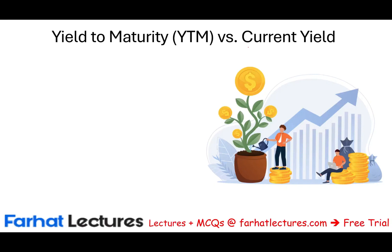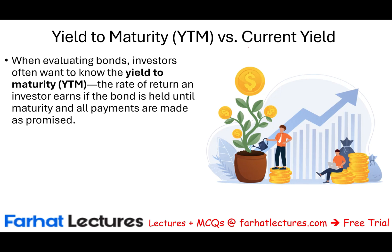Hello, and welcome to this session in which we will discuss yield to maturity, YTM, versus the current yield. Many students confuse the two. Yield to maturity refers to the interest rate that an investor earns when they hold the bond until the bond matures. That's yield to maturity — what rate of return am I earning if I hold the bond until it matures, until all the payments are made and I hold it till the end.